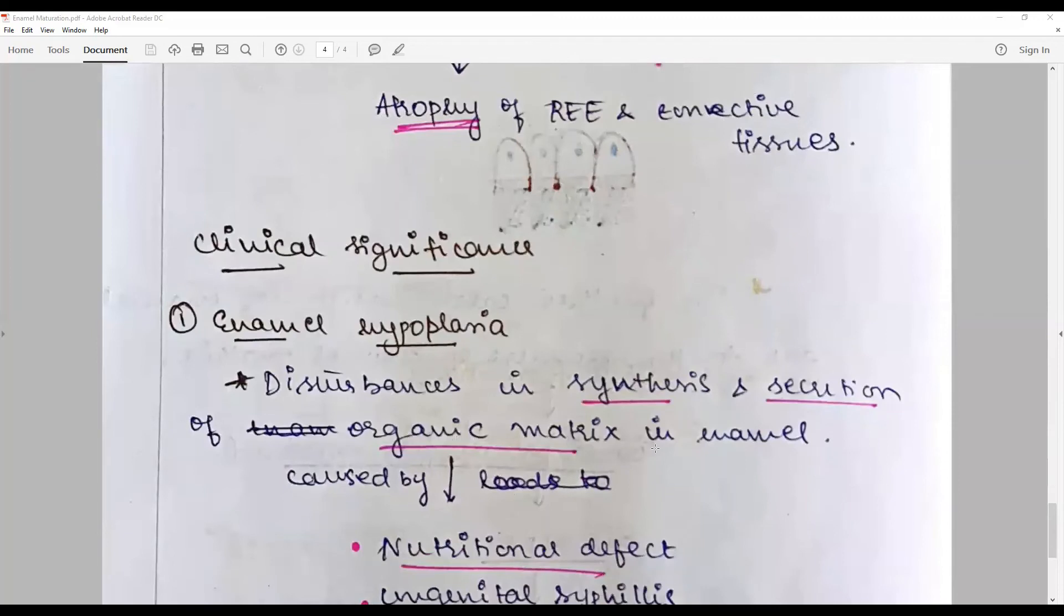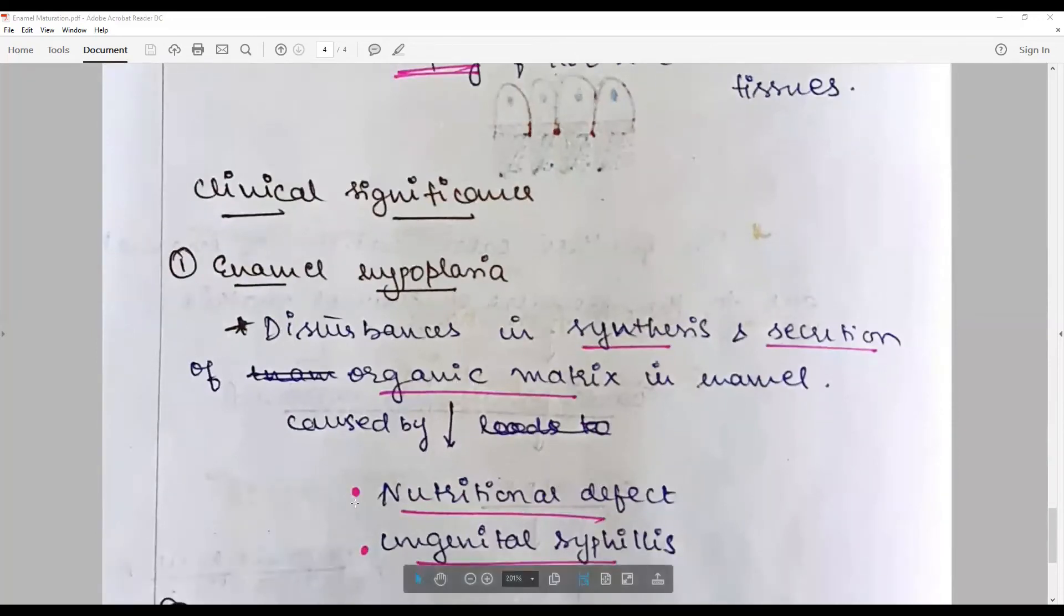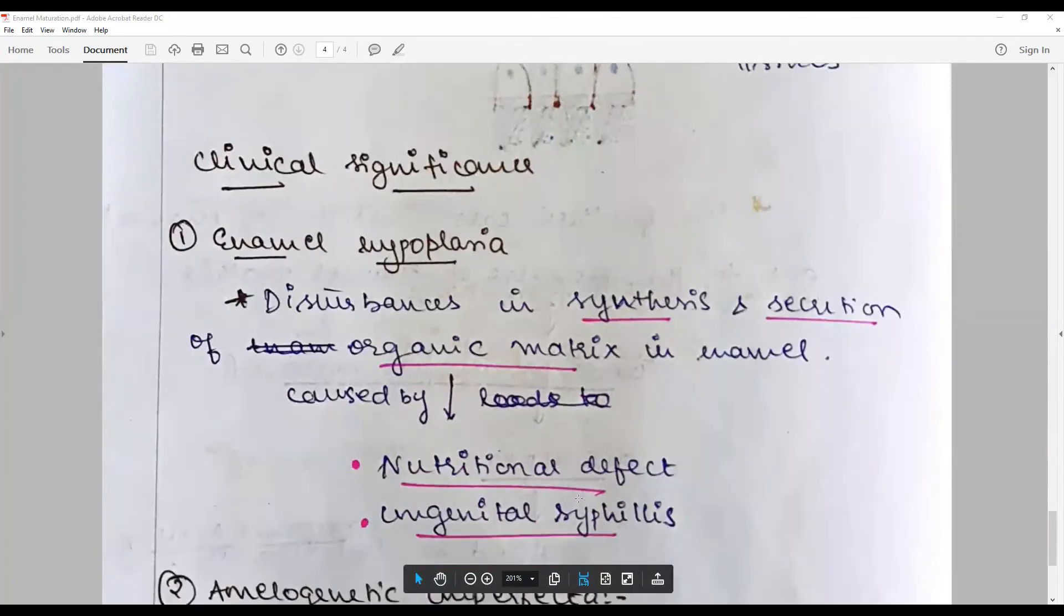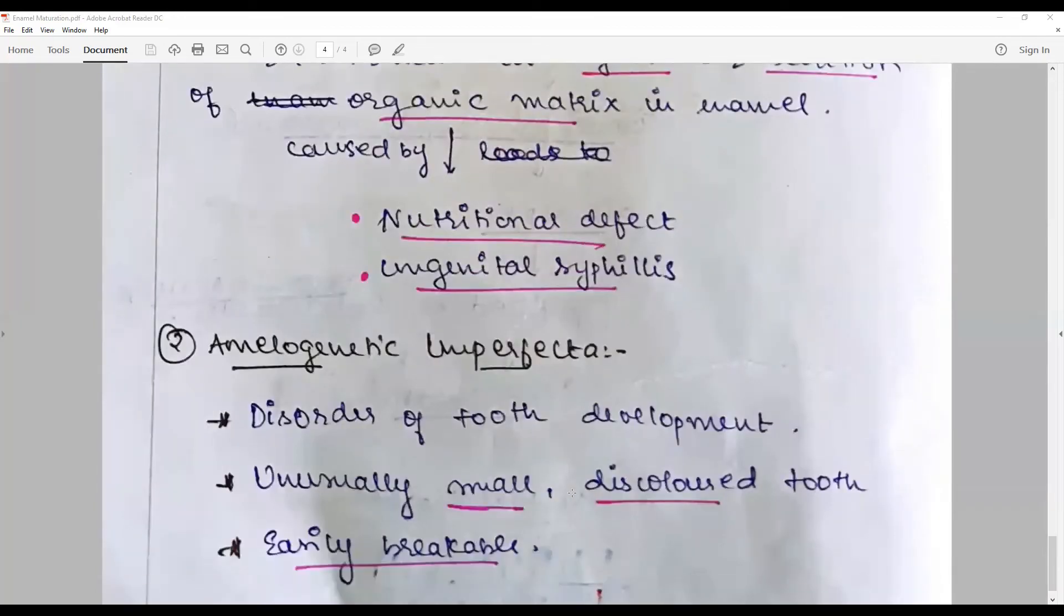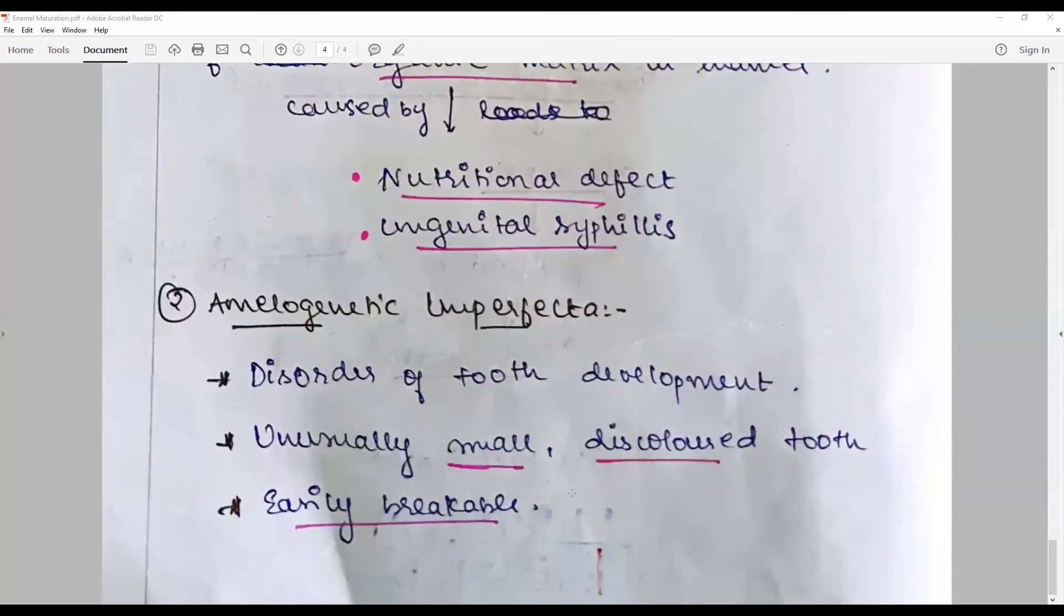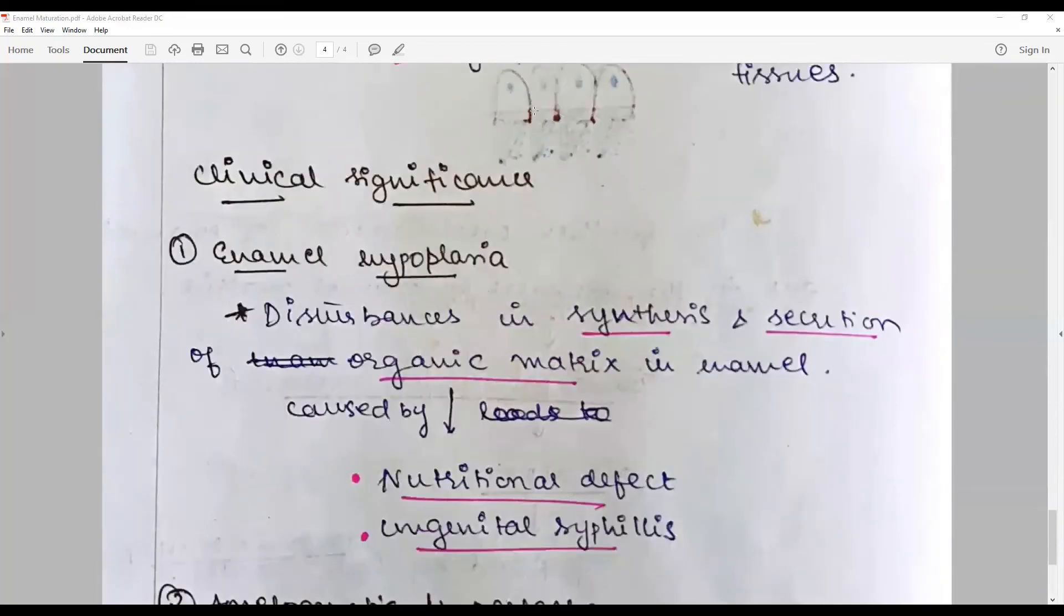Clinical significance: any issues with this maturative phase may lead to enamel hypoplasia. Disturbance in synthesis and secretion of organic matrix in enamel could be caused by nutritional defects, congenital syphilis, or any other environmental issues like fluoride presence. Amelogenesis imperfecta can happen due to defects in this stage. So that brings us to the discussion on the maturation of enamel.